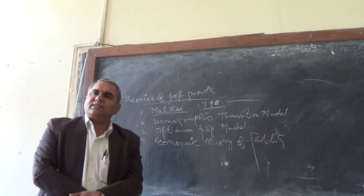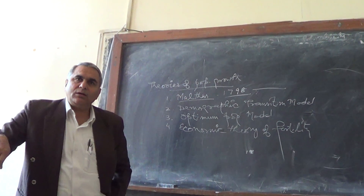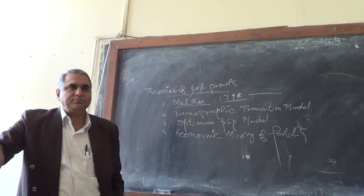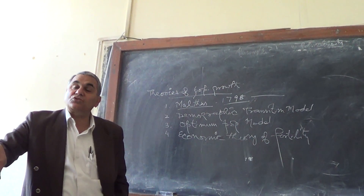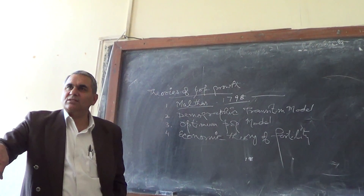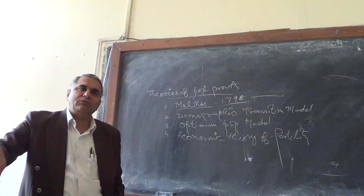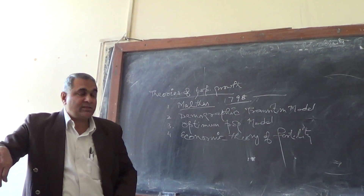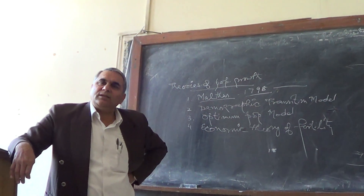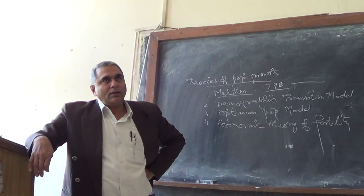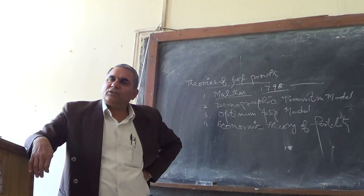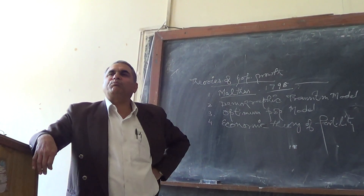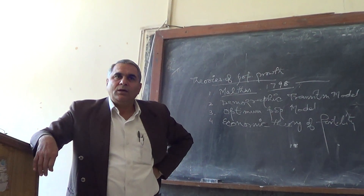1798 is the time when the Industrial Revolution started from England, and England faced a series of problems after industrialization. People were coming from rural areas to urban areas, working in industries, training centers, and institutes. All people shifted from agriculture to non-agriculture and experienced a variety of problems.